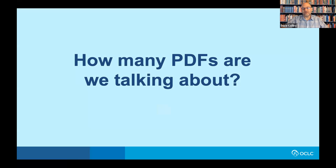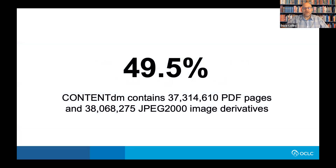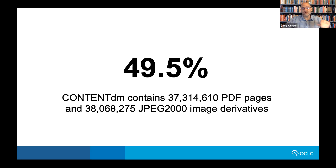So how many PDFs are we talking about in ContentDM? Was it really that big a deal to not have PDF support? In total, we have 37 million individual PDF pages and 38 million JPEG 2000 image derivatives — so nearly 50% of all the content we were serving is PDF. Many of the PDFs are a single image on a PDF page used for OCR transcription and overlay. So it became a necessity that we support PDF.